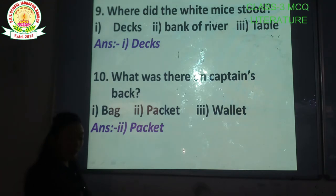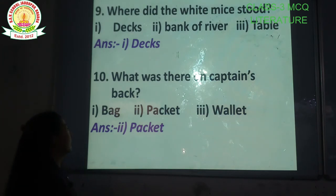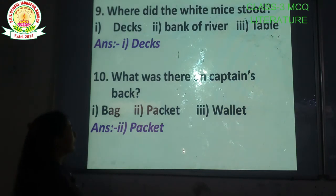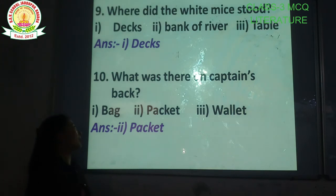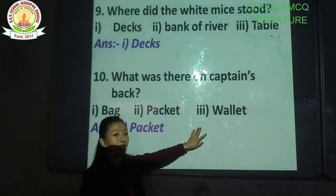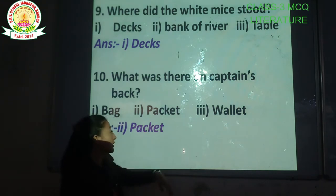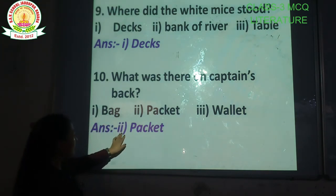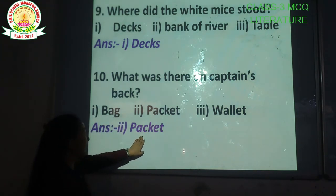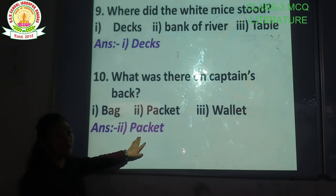Question number 10: What was there on the captain's back? Options are: wallet, packet, table. The correct answer is option number 2 — packet. What was on the captain's back? Packet.